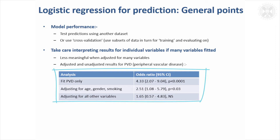But if that model were adjusted for all other variables, the odds ratio for peripheral vascular disease actually became non-significant. It's still greater than one, so they're still estimating more odds of death with peripheral vascular disease, but it's not significant. In that case, you've probably over-adjusted because you've adjusted for all sorts of other types of disease, including cardiovascular diseases, which are associated with peripheral vascular disease. So you've probably got rid of some of the effect of peripheral vascular disease that you're interested in, and you need to be a bit careful when interpreting the factors in your model to bear in mind what you've adjusted for.